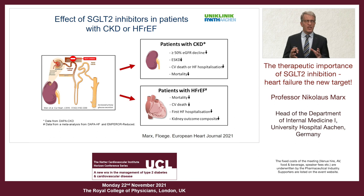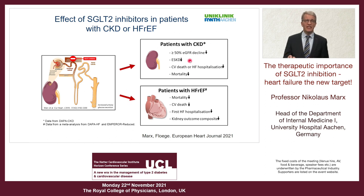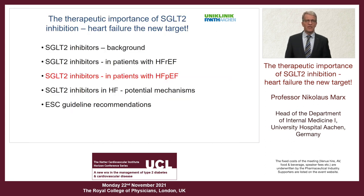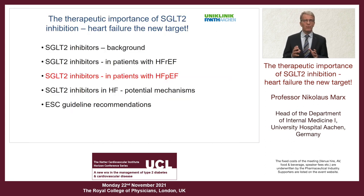Combining all these data, we now have evidence from diabetes trials, from DAPA-CKD showing reduced cardiovascular endpoints in addition to kidney endpoints, and from the two outcome trials DAPA-HF and EMPEROR-Reduced. Let's shift gears and look at the second important entity: HFpEF, a disease associated with many comorbidities.